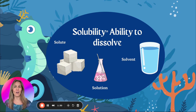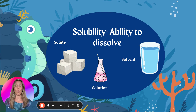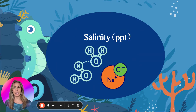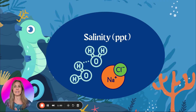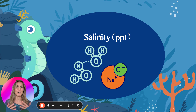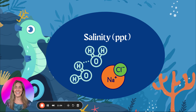We also saw the word solubility. Think 'ability' — it's the ability to dissolve, whether something can dissolve or not. Now, salinity: salinity is measured in parts per thousand, abbreviated PPT. You should know that salinity is measured in parts per thousand, PPT. Salinity is salt dissolving in water — salt and water making a solution. Salinity is the dissolved salt in water.